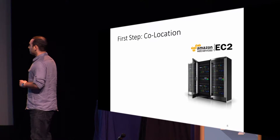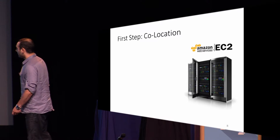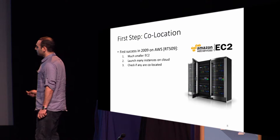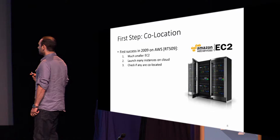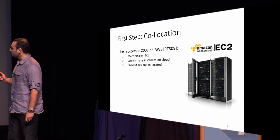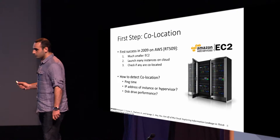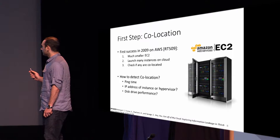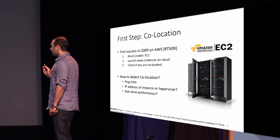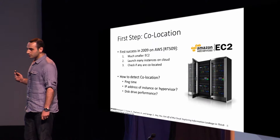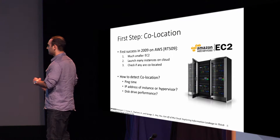As mentioned earlier, Ristenpart et al. also performed co-location experiments in 2009. At that time, Amazon EC2 was much, much smaller. They launched multiple instances and checked if any were co-located with each other. To perform the check, they used ping times between instances to indicate possible co-location, the IP addresses of instances and hypervisors, and disk drive performance to create a bottleneck and send signals between VMs.